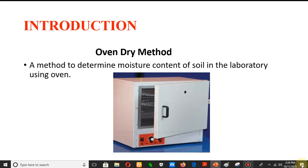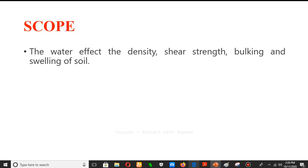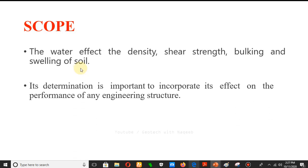The oven dry method is a laboratory method and uses an oven. Regarding the scope of determining moisture content: water basically affects the density, shear strength, bulking, and swelling of the soil. Its determination is important to incorporate its effect on the performance of any engineering structure. Excess water in soil causes reduction in strength, making moisture content determination a fundamental property in geotechnical engineering.